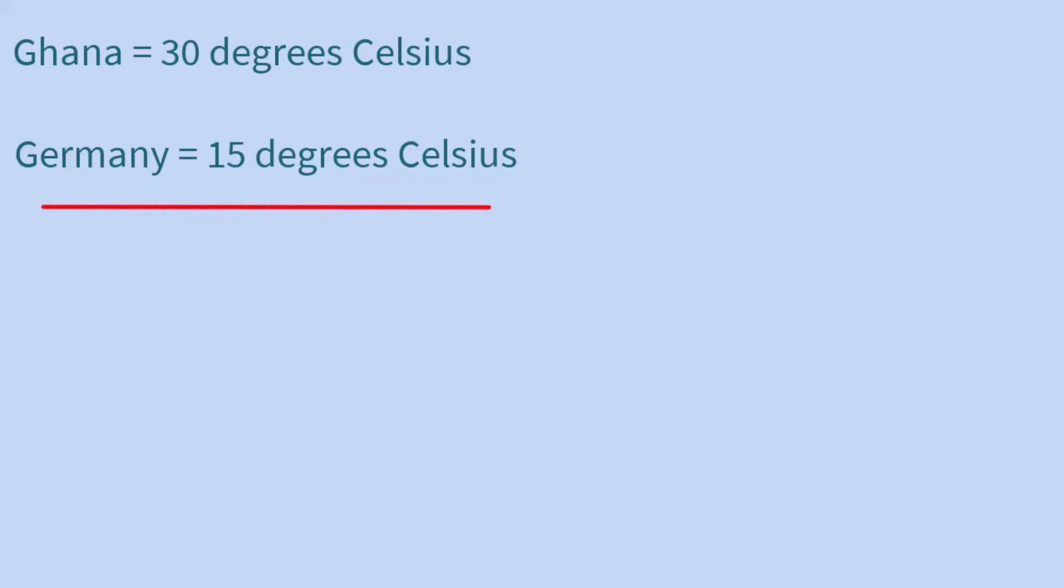Let's say the temperature in Ghana today is 30 degrees Celsius and that of Germany is 15 degrees Celsius. We can only find the difference and say that Ghana is 15 degrees Celsius hotter than Germany today. However, we cannot conclude that Ghana is twice as hot as Germany today.